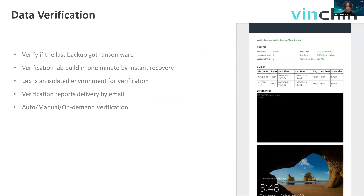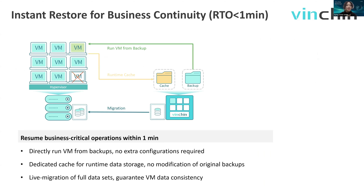For data verification — we verify the availability of your backup data. With multiple backup data, you can set up a verification job to regularly verify if backup data is recoverable and send reports to your email address. You can check whether data is good for use, with no variance or damage. For instant restore, if the business system gets ransomware, we can quickly resume business — the RTO will be less than one minute, largely reducing costs from long RTO.